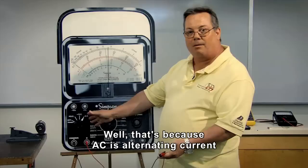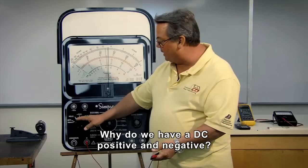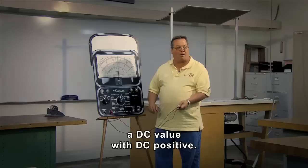Well you may ask how come there isn't an AC positive or negative. Well that's because AC is alternating current and DC is not. Why do we have a DC positive and negative?